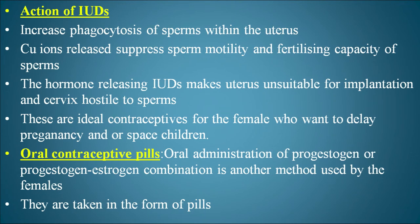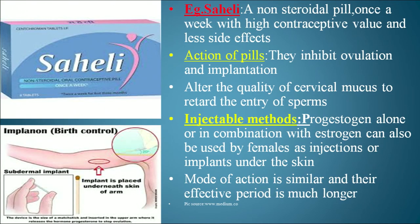IUDs are ideal contraceptives for females who want to delay or space pregnancies. Oral contraceptive pills involve oral administration of progestogen or a progestogen-estrogen combination. They are taken in pill form — for example, Saheli, which is a non-steroidal once-a-week pill made by CDRI Lucknow (Central Drug Research Institute), with high contraceptive value and fewer side effects. Pills inhibit ovulation and implantation and alter cervical mucus quality to retard sperm entry.